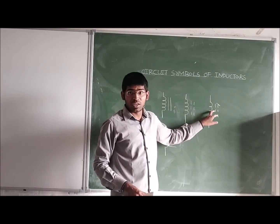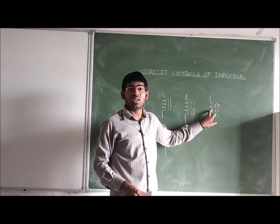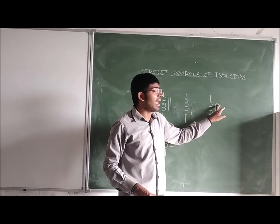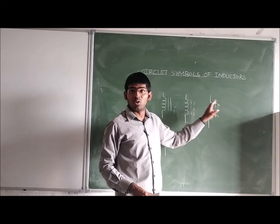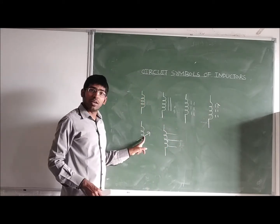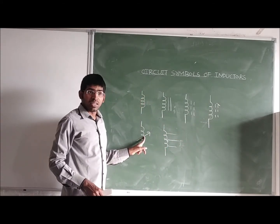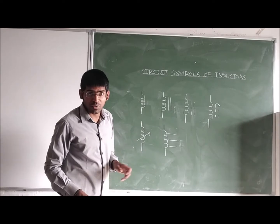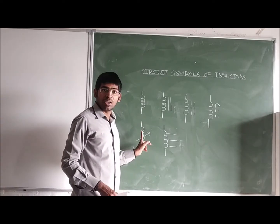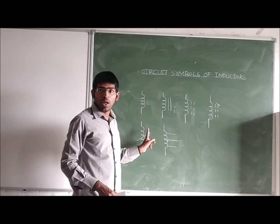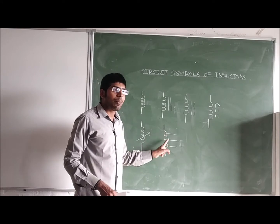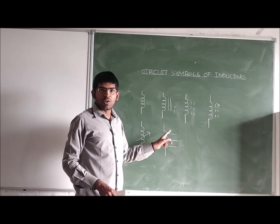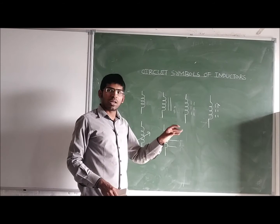This is the variable ferrite core — a movable ferrite core inductor. We can shift the position of the core material, and we indicate this using an arrow. This is a variable inductor because the inductance value can be changed.